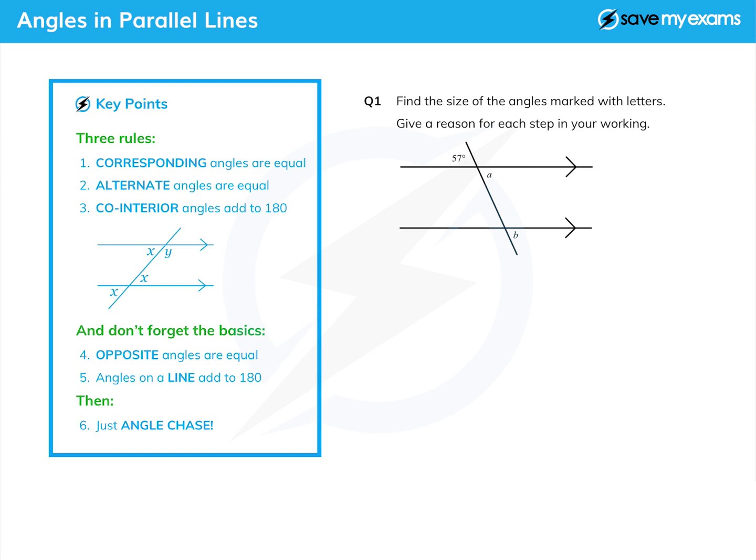Let's do a couple of questions - one quite straightforward and one a bit harder. Here's the straightforward one: find the size of the angles marked with letters. So we need to find a and b. The crucial bit is to give a reason for each step in your working. Fairly clearly, a equals 57 degrees. But it's the reason you'll really get the marks for. That is just one of the two basic things - opposite angles are equal.